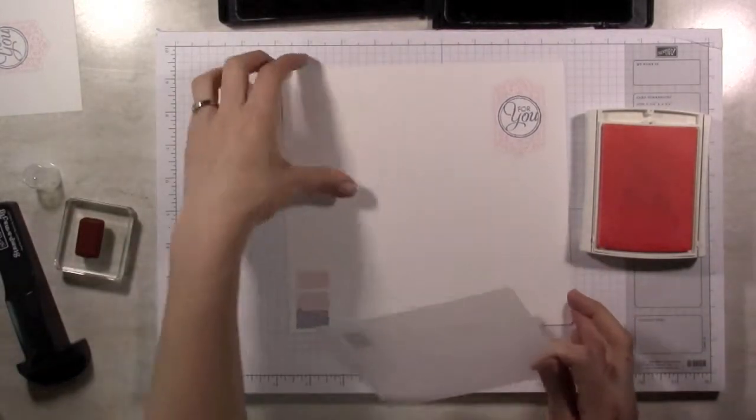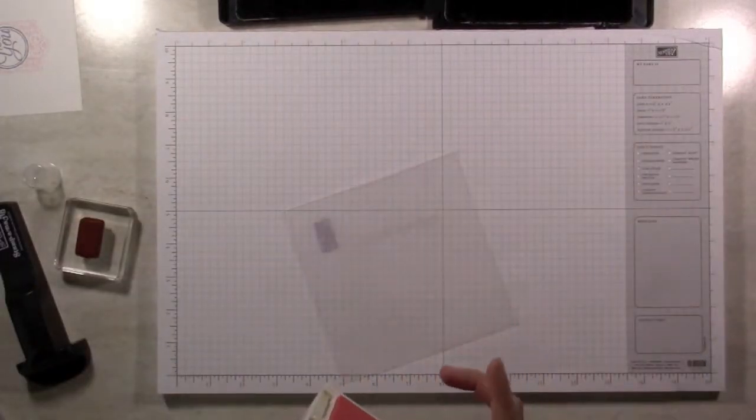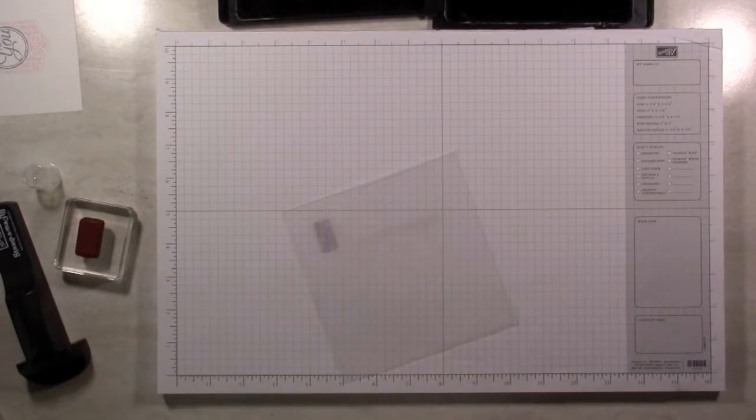So to clean your stamp-a-ma-jig you can wipe it with a damp paper towel. You could probably use a baby wipe. It's not real touchy. It's just a clear wipeable plastic so you don't have to be fussy with it.